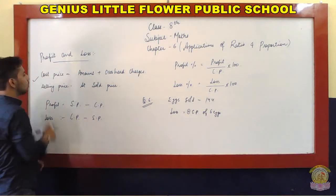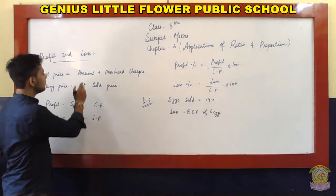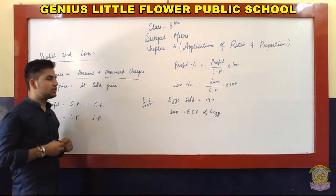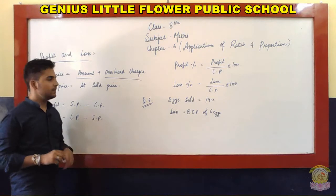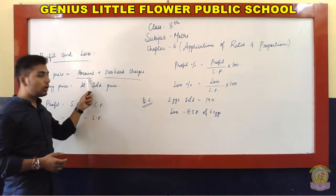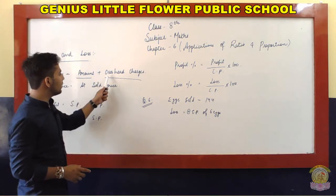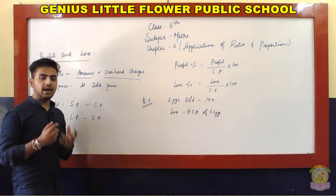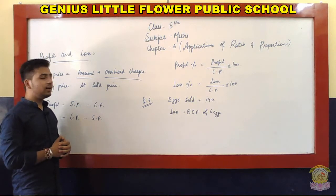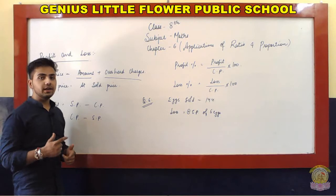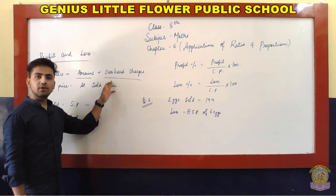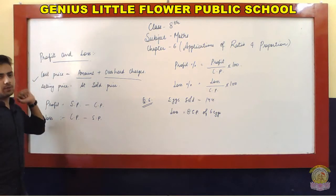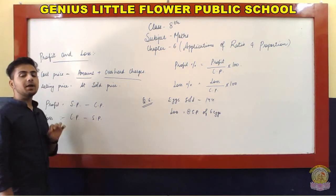Cost price means the amount plus overhead charges — or you can say the actual amount we have spent to purchase an item is called cost price. The amount is the actual amount at which we purchased, and overhead charges are the expenditure done on it. For example, if we brought an ice cream, the overhead charges include keeping it cool in a freezer, so the electricity charge is the overhead charge. So amount plus overhead charges equals cost price.